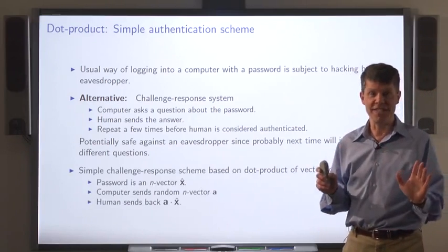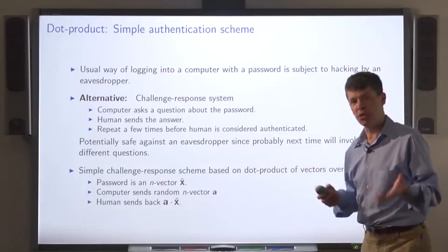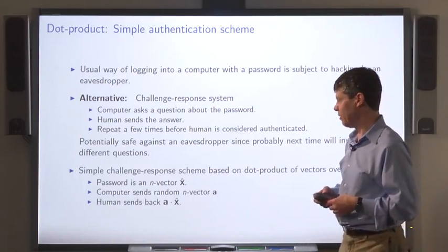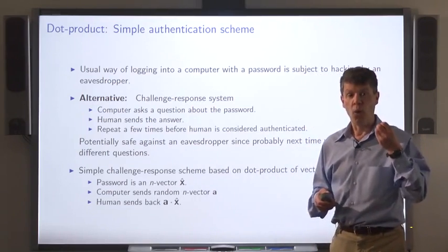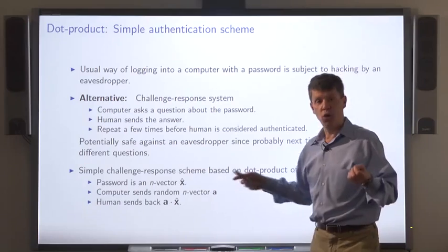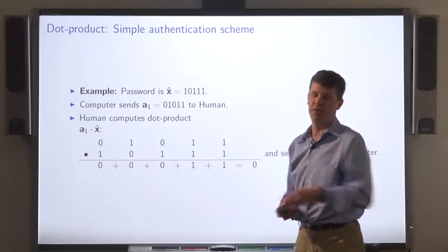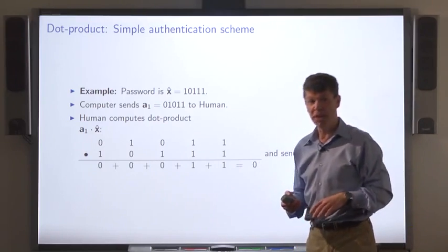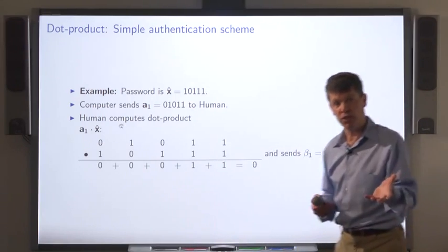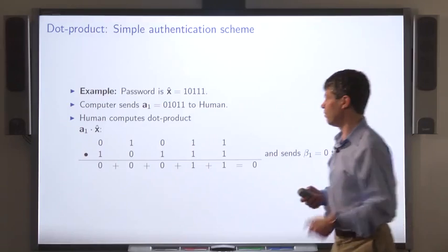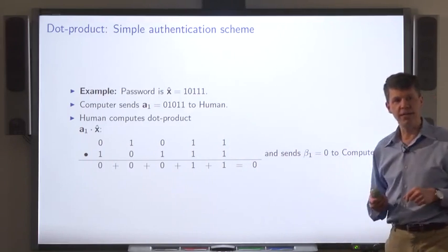Here's a simple authentication scheme — not one that's really secure, but one that illustrates the idea of a dot product over GF2. The password is some long N-vector over GF2, we'll call X. The question is another N-vector, which we'll call A. The human sends back one bit, namely the dot product of the question A with the password X. For example, let's say the password is 10111. The computer chooses as its question the vector 01011, sends that to the human. The human computes the dot product of that question with the password and ends up with zero, sending back zero as the response. Let's call that response beta 1.